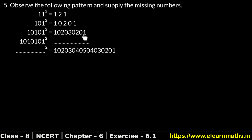Now, 1010101 has 4 ones. So it will go 10203040 and then decrease from 4. So it becomes 1020304030201.